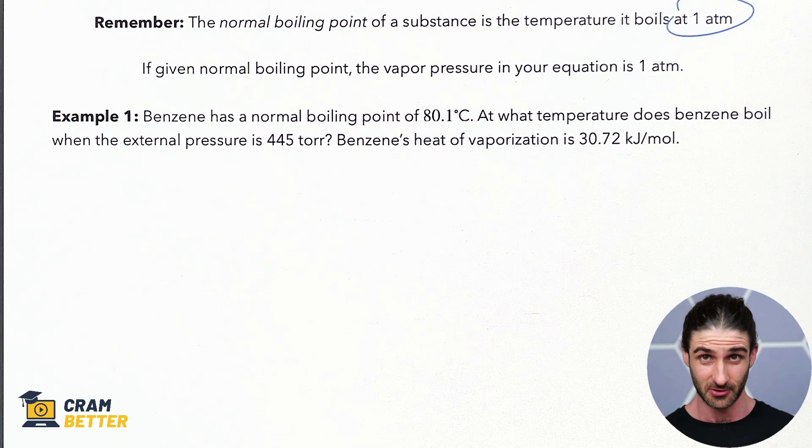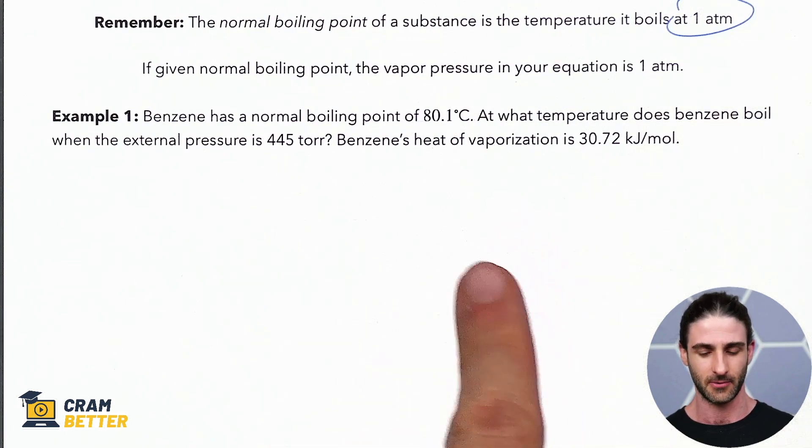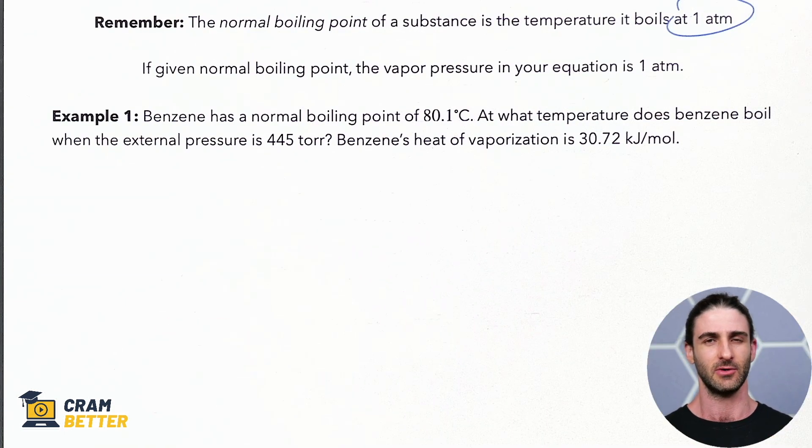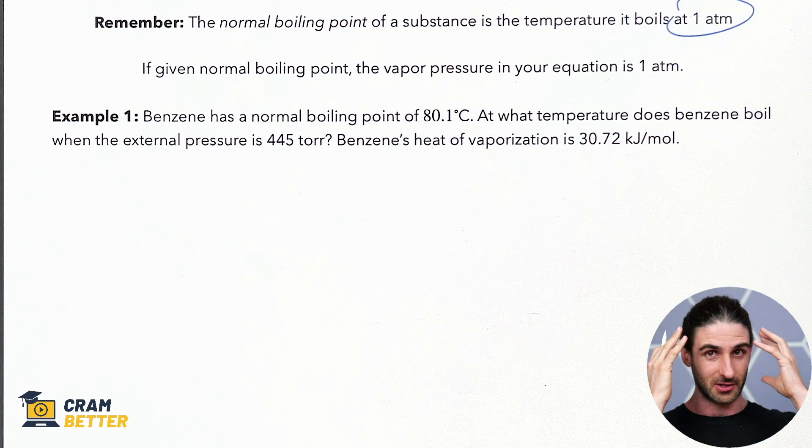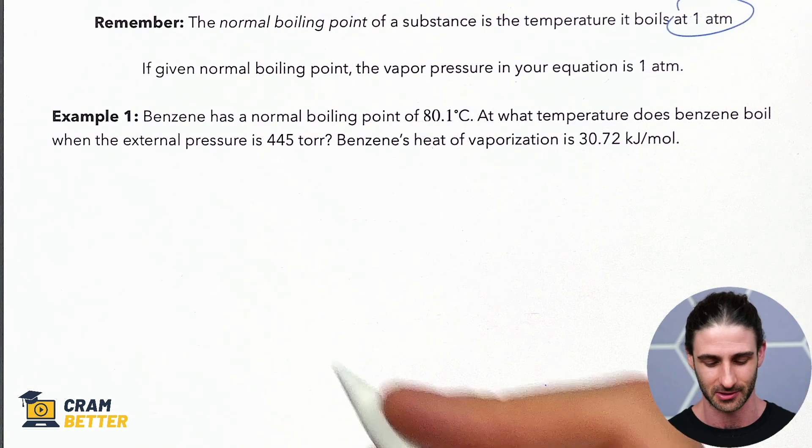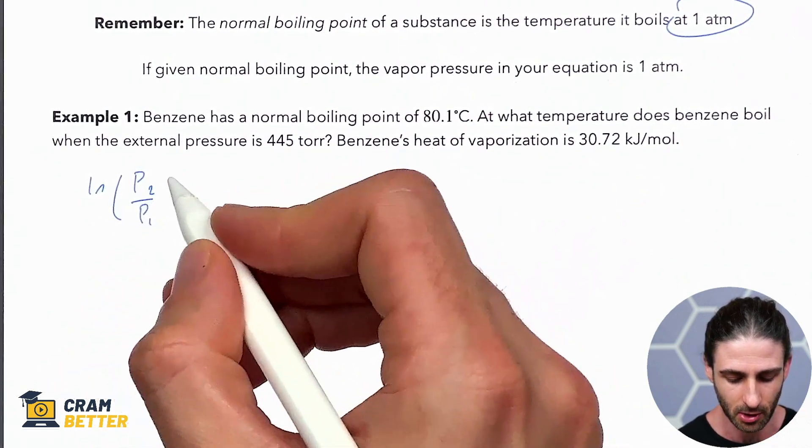So, in other words, when you see that phrase, normal boiling point, you should immediately assume that the pressure associated with that temperature is 1 atm, or 760 torr, depending on what units are given in the problem. Let's take a look. Benzene has a normal boiling point of 80.1 degrees Celsius. At what temperature does benzene boil when the external pressure is 445 torr? Benzene's heat of vaporization is 30.72 kilojoules per mole. Alright. So, this is screaming Clausius-Clapeyron equation. How are we going to know that come exam time? Well, you're going to be given the heat of vaporization, and it's going to be something where they give you a temperature and a pressure, and then some other temperature and a pressure.